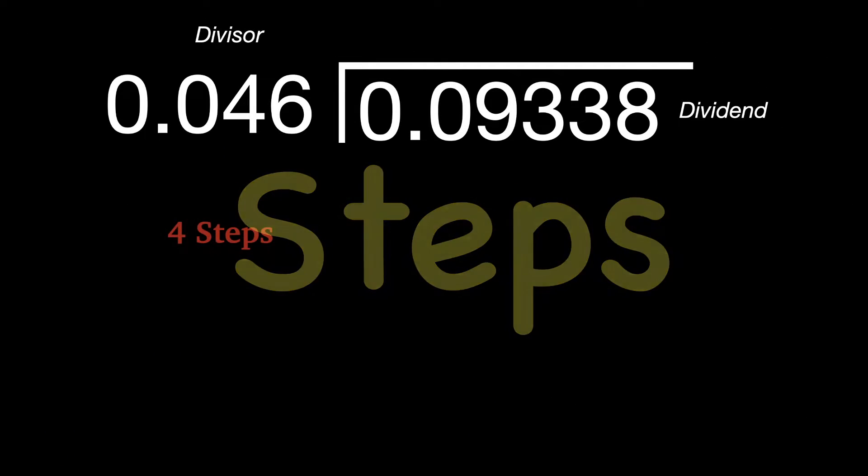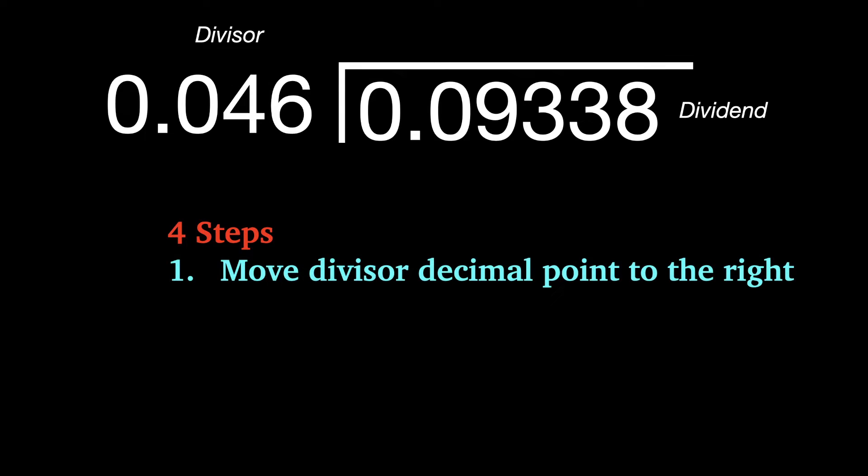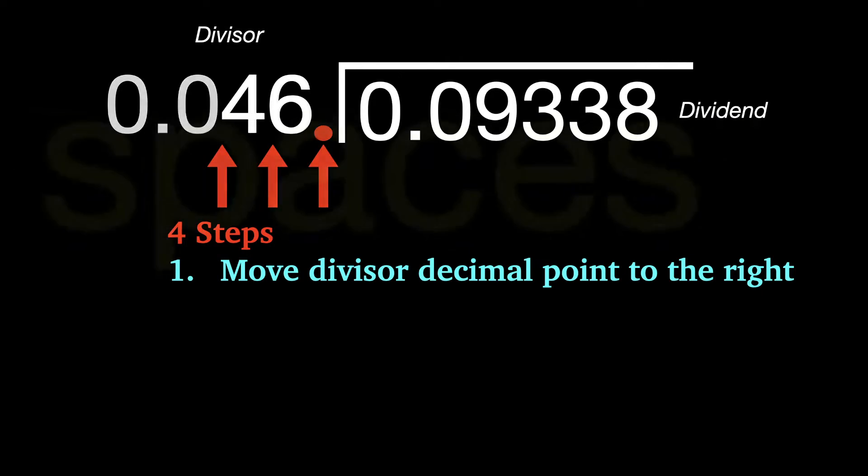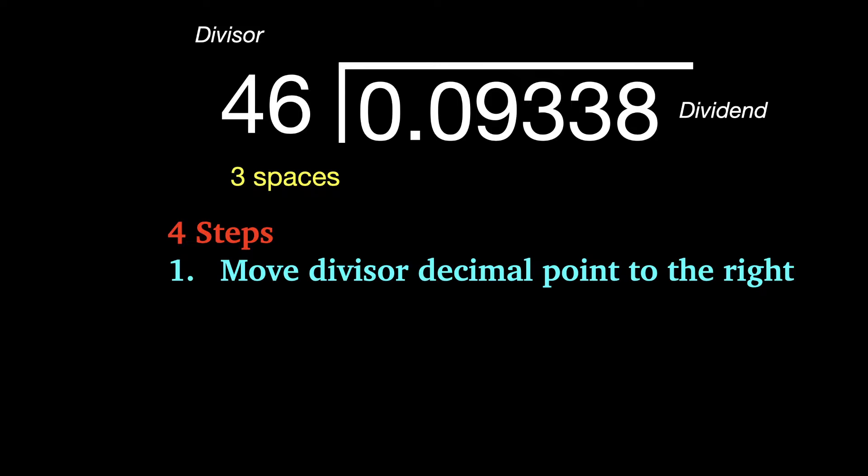There are four steps. The first step is move your divisor decimal point all the way over to the right so that you create a whole number. But when you do that, make sure that you count the number of spaces, in this case three, because you'll need that information for the next step.